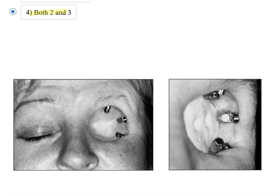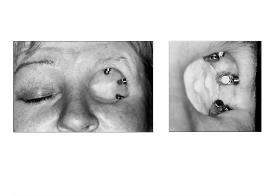The next image shows orbital restoration again - there are three implants along the rim of the orbit that provide magnetic attachment for the maxillofacial prosthesis.